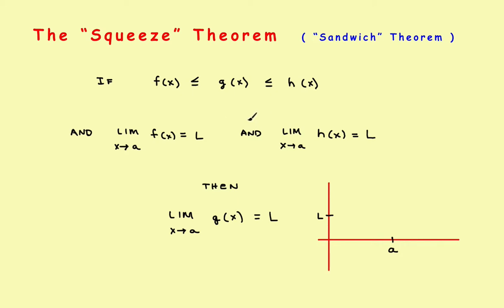The idea is this: if some f(x) is less than or equal to g(x) which is less than or equal to h(x), your original function will actually be the one in the middle. So the problem you're given will be g(x) — that's your original problem. And what you'd like to do is find the limit of the original function and hopefully show that it equals some fixed value.